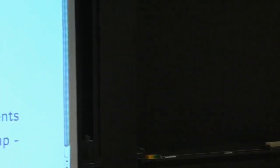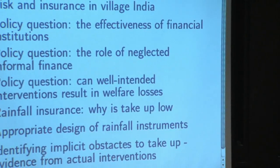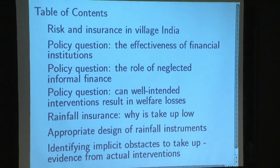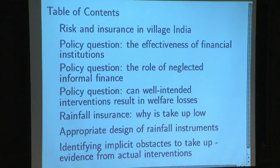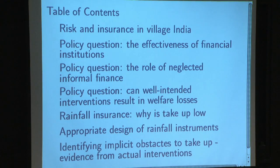Rather than starting with some randomized control trial and targeting, we will get to those control trials in the discussion. So here's the outline. We'll look at risk and insurance in Village India, move to a benchmark way of measuring the effectiveness of financial institutions on the formal side. We'll then couple that with work on the informal side and networks.